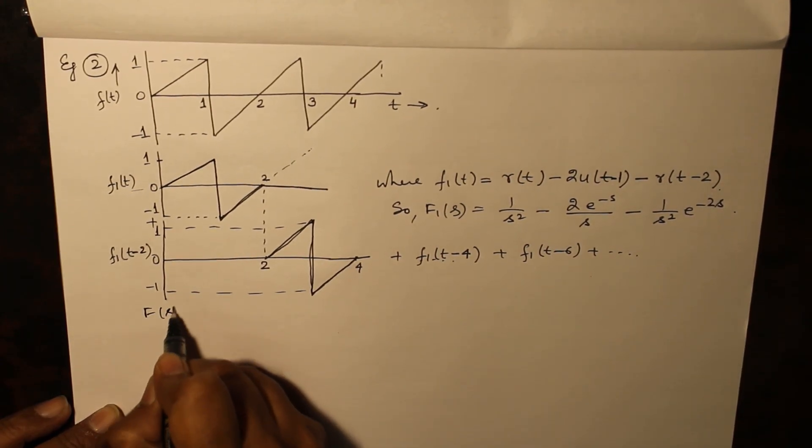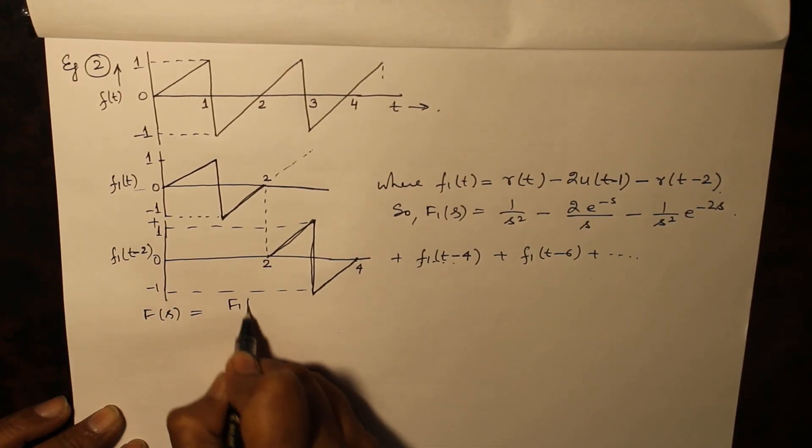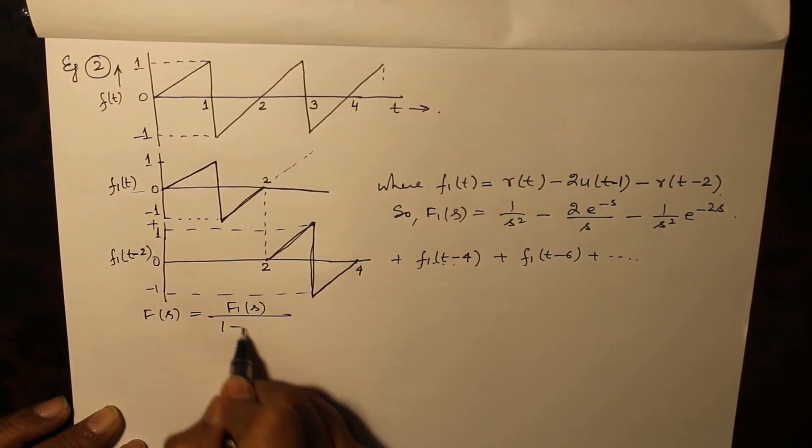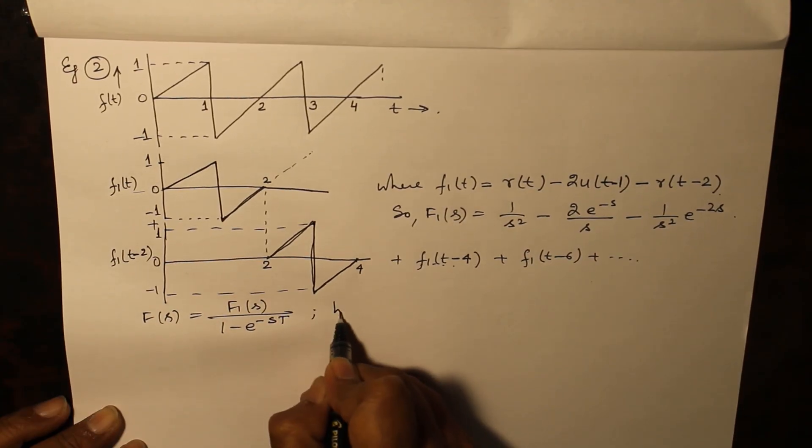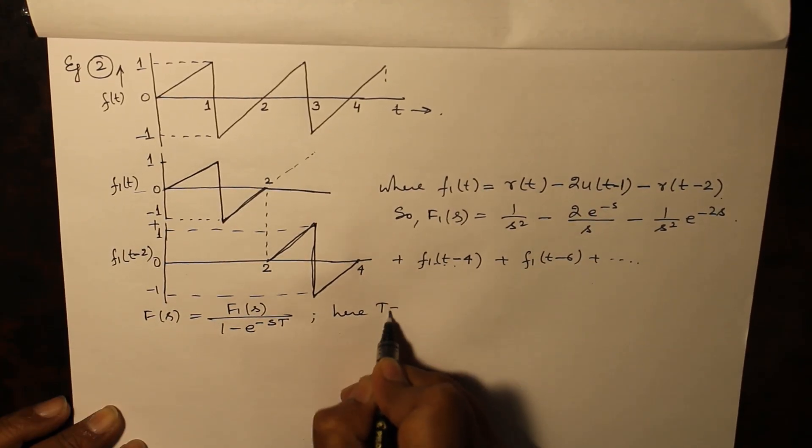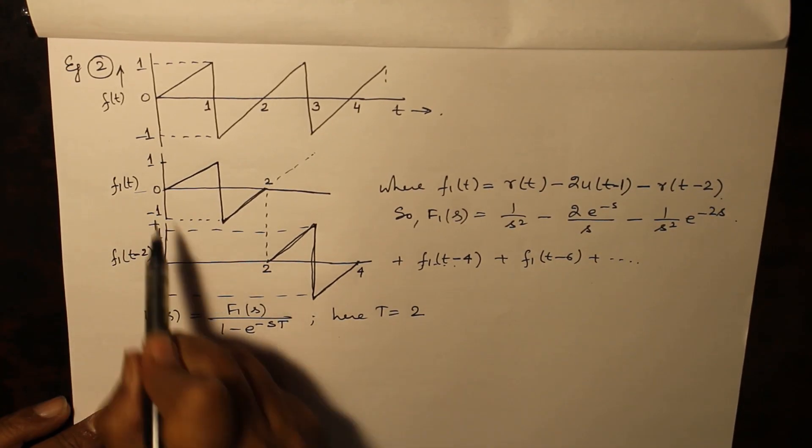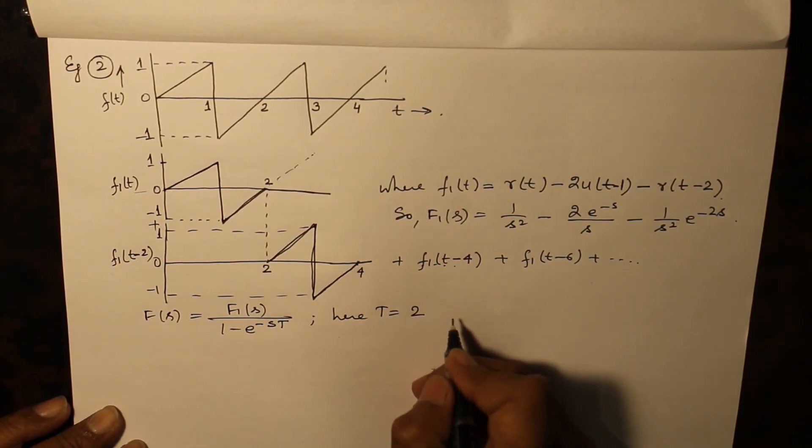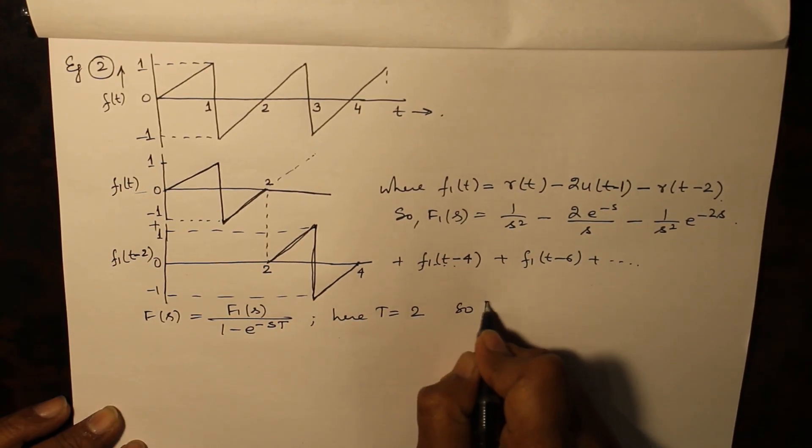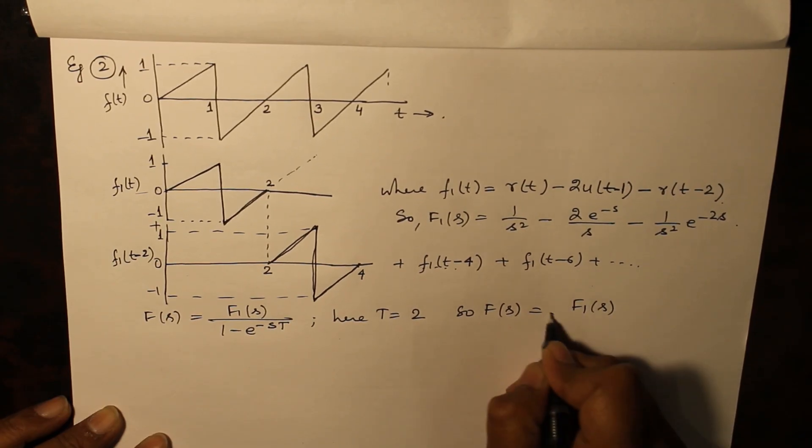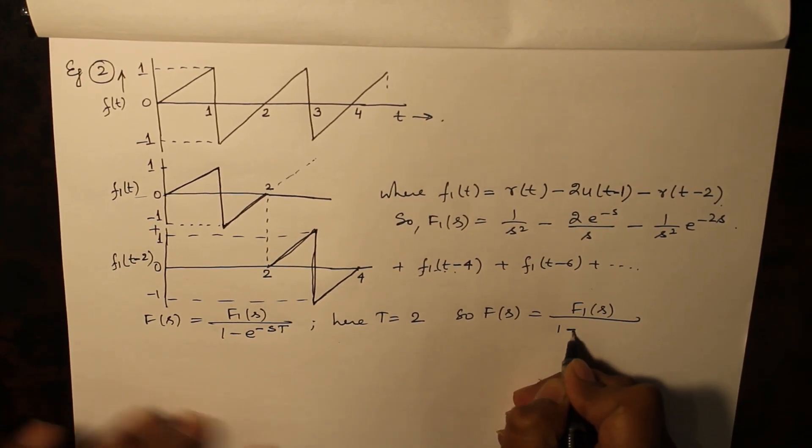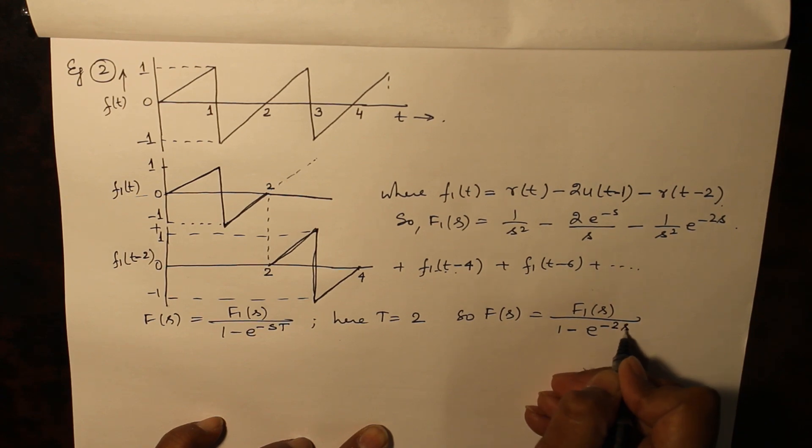As we are aware, F(s) is equal to f1(s) divided by 1 minus e raised to the power minus sT. Here T is equal to 2, the repetition is at t equals 2. So f1(s) is equal to f1(s) divided by 1 minus e raised to the power minus 2s.